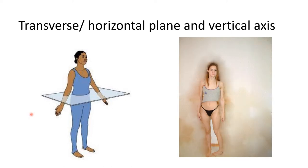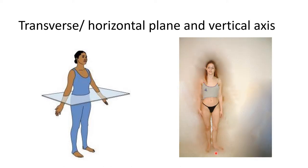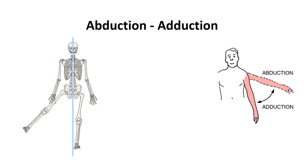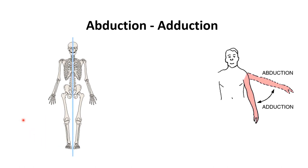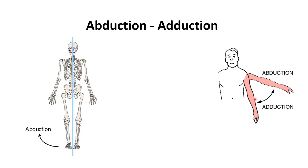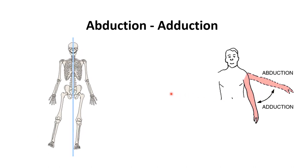Observe the movements in the transverse or horizontal plane with the vertical axis — they are medial rotation and lateral rotation. Observe the movement of the lower limb — that movement is abduction and adduction. Similarly for the upper limb, you can see what is abduction and what is adduction.